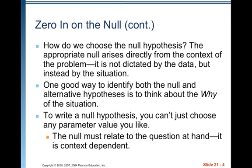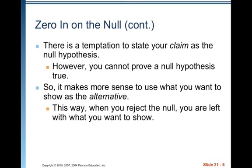One good way to identify both the null and alternative hypotheses is to think about the why of the situation. To write a null hypothesis, you can't just choose any parameter value you like. The null must relate to the question at hand — it is context dependent. There is a temptation to state your claim as the null hypothesis. However, you cannot prove a null hypothesis true.